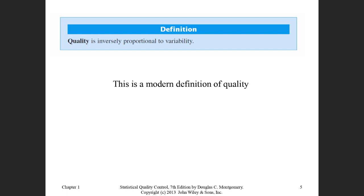There is a modern definition of quality: inversely proportional to variability. Let's take it piece by piece, starting with variability. Variability means you are not consistent in delivering a service or producing a product. Imagine producing cell phones — sometimes the phone works, sometimes it doesn't; the speaker is sometimes loud, sometimes too low; the battery and dimensions are not consistent. That is variability — you are producing the same phone, but the features vary between units.